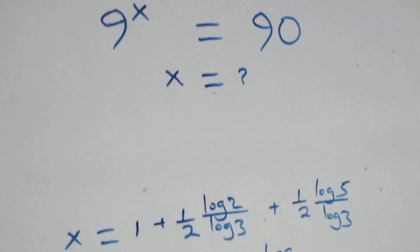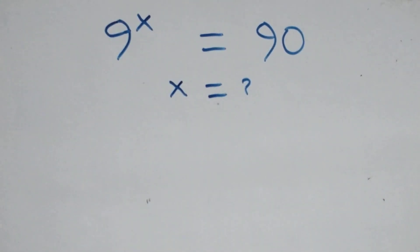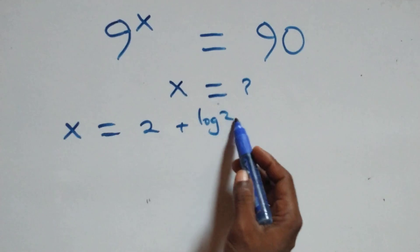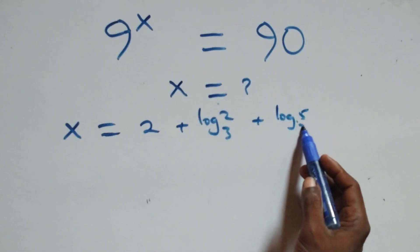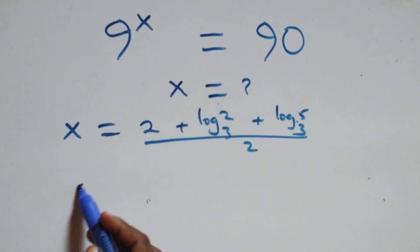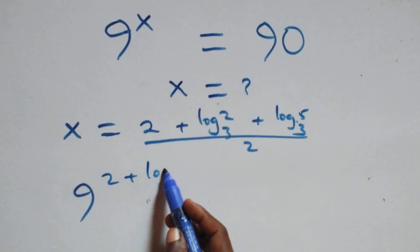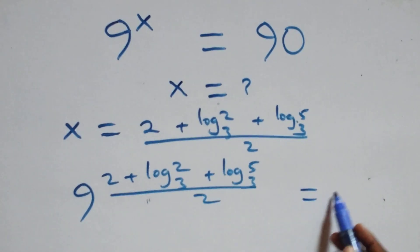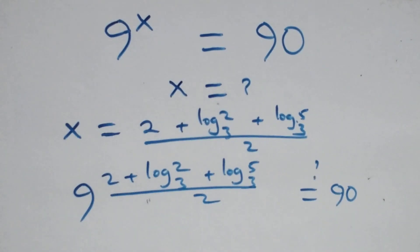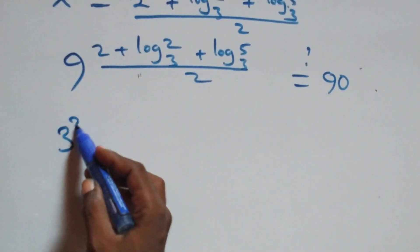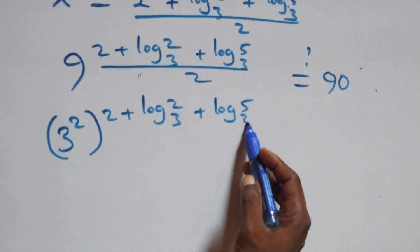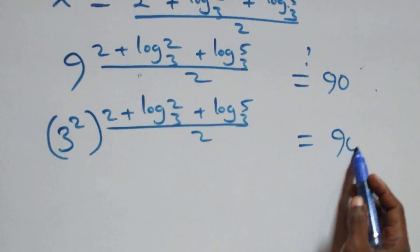Let's check here if this satisfies the given problem. We substitute x equals to 2 plus log 2 base 3 plus log 5 base 3 all over 2. So we have 9 raised to the power of 2 plus log 2 base 3 plus log 5 base 3 all over 2, and this should equal 90. We can write 9 as 3 squared, raised to that same power.